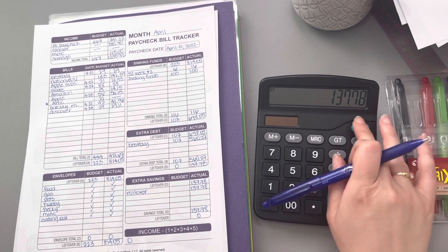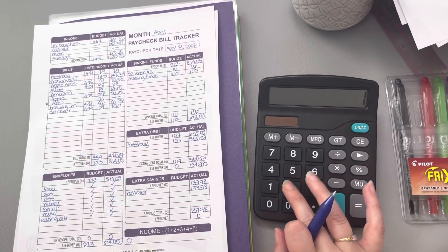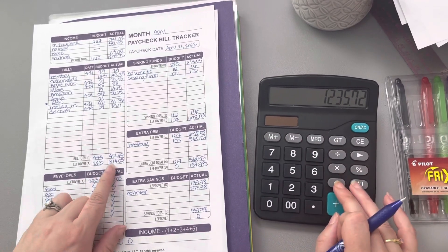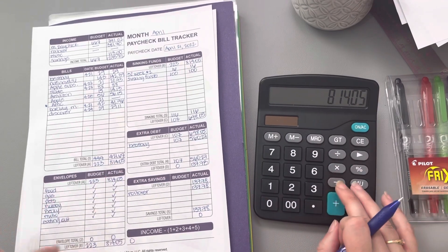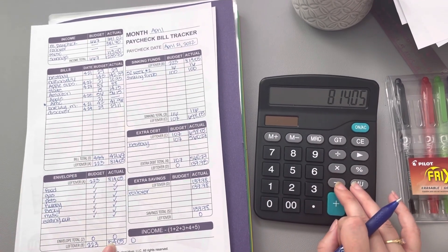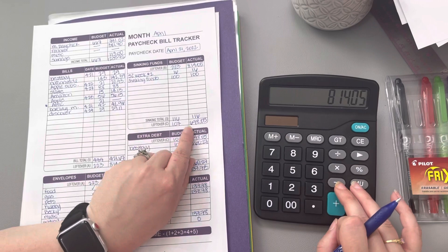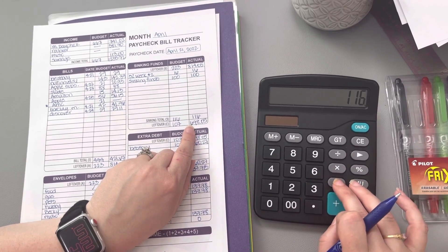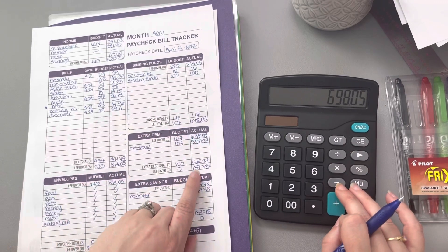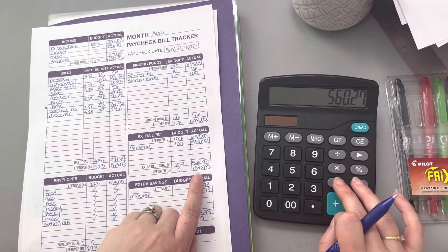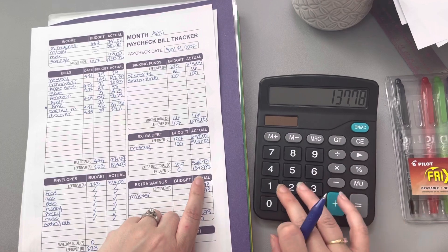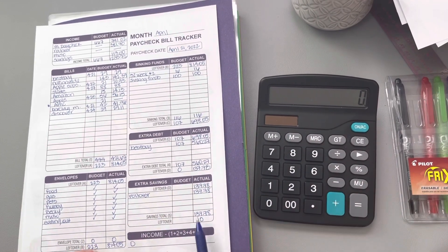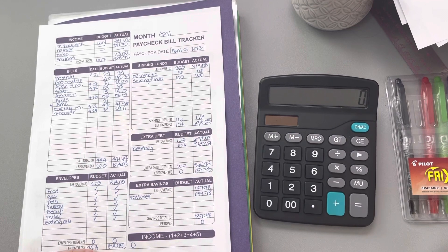So let's go ahead and make sure that my math is correct. So we've got $1,235.72 minus our bill total. There's nothing for our variable envelopes, so minus the $116 for our sinking funds, minus the $560.27, minus the $137.78, and that gives us that zero for the zero-based budget.